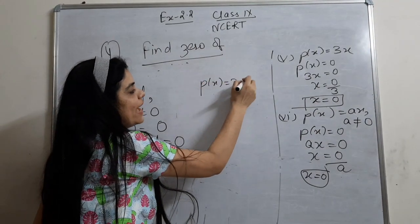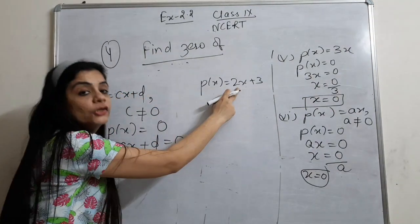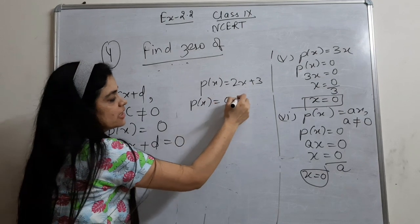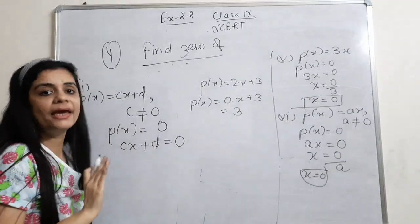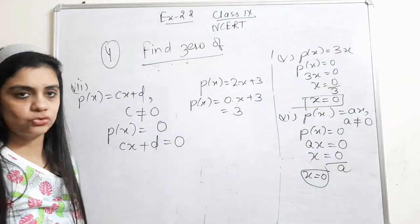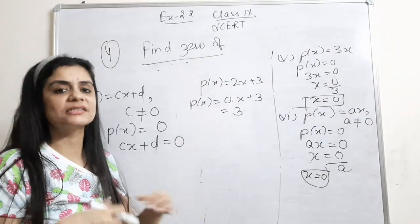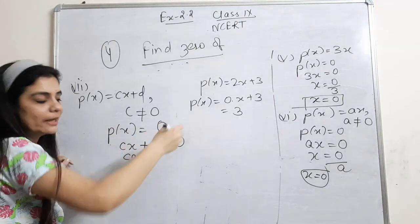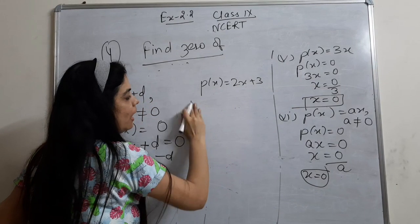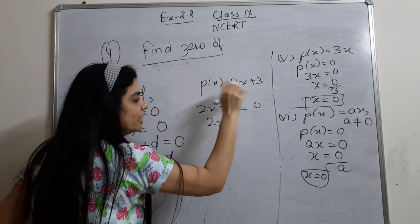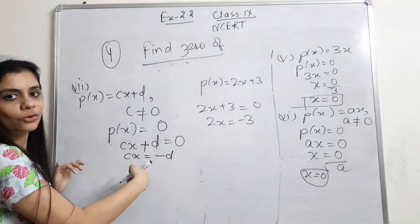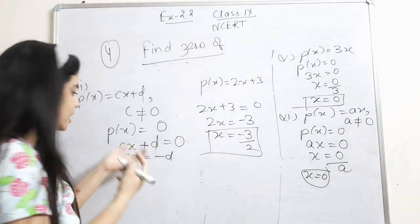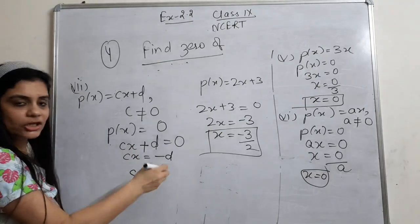For example, 2x + 3 is of the form cx + d where c = 2 and d = 3. If c were zero, it would become 0 times x + 3, which is just 3. So c cannot be zero. Now set cx + d = 0: cx = minus d, so x = minus d divided by c. That is x = -d/c, which is your answer.